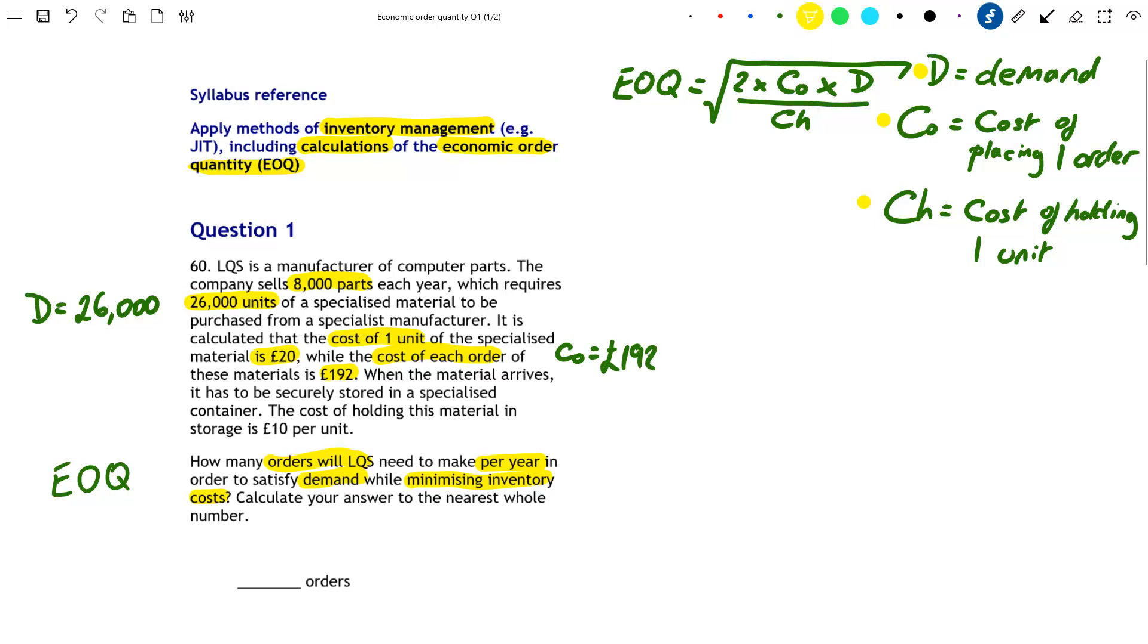Moving on, when the material arrives, it is to be securely stored in a specialized container. Again, flavor text irrelevant. The last sentence, though, does say that the cost of holding this material in storage is 10 pounds per unit. Well, if we can see that CH is the cost of holding one unit, then we know that CH is equal to 10 pounds.